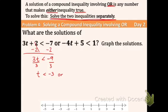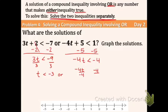Bring down the 'or' and now we're going to do opposite operations for the next inequality. Subtract 5, so -4t < -4. We're going to divide both sides by -4. Remember, when we multiply or divide by a negative, we have to flip the symbol. So we get t > 1.